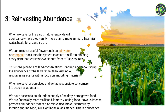Third, reinvesting abundance: when we care for the earth, nature responds with abundance — more biodiversity, more plants, more animals, healthier water, healthier air. We can reinvest useful flows such as rainwater or compost back into the system to create a self-maintaining ecosystem that requires fewer inputs from off-site sources. This is the pinnacle of land conservation — honoring and encouraging the abundance of the land rather than viewing our resources as scarce.